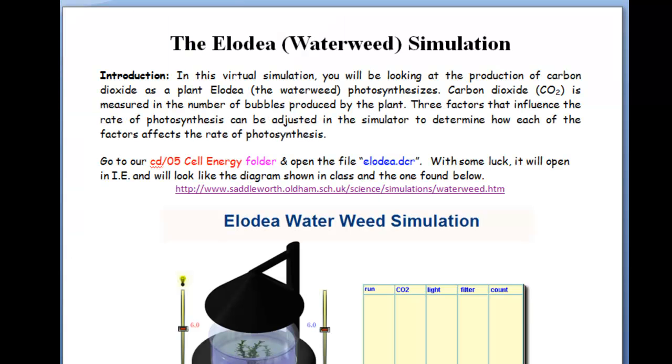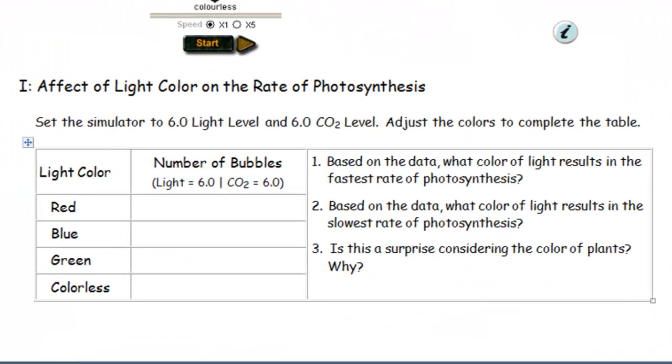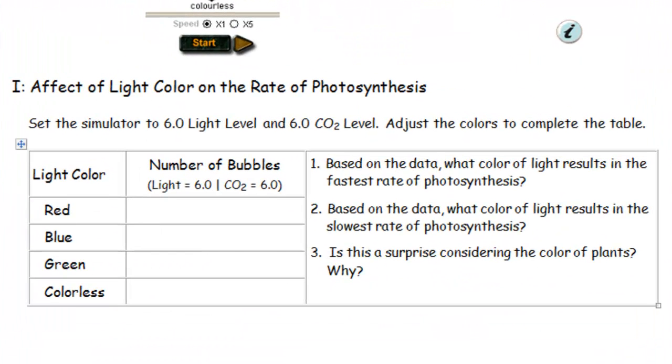Okay, we go back to the simulation. You're going to do three different tests. You're going to affect the light color. So you're going to actually set the light for six. You're going to set the carbon dioxide to six, keeping them as a constant. And the only variable is going to be color. Number of bubbles for red, blue, green, and the colorless light. And then answer these three questions.